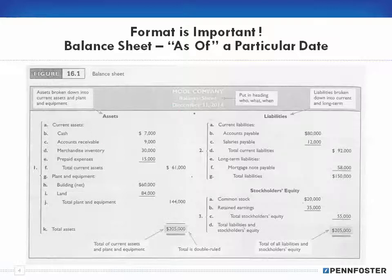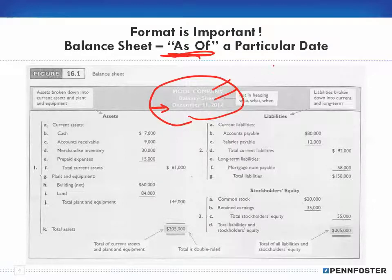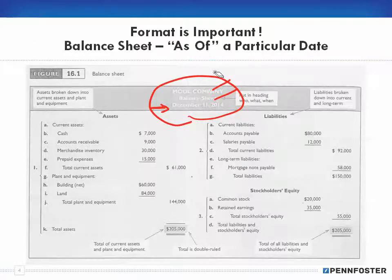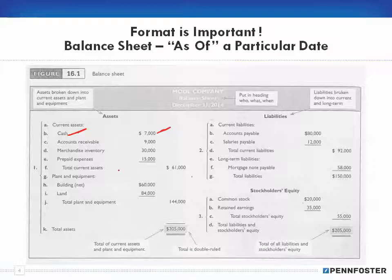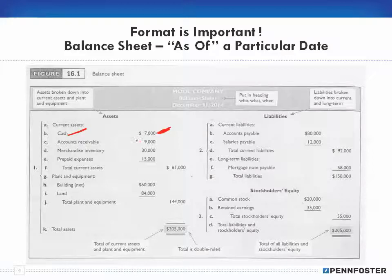For a financial statement, the heading is important: you need the name of the company, the name of the statement, and the date. With the balance sheet, it's as of a particular date — in this case December 31st, 2014. The balance sheet shows the financial position of the company since its inception. For example, a cash balance of $7,000 represents what's in the account after the company has been in business for five years.